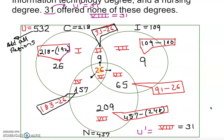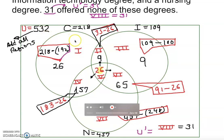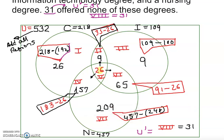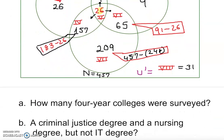Now I can find the universal set by adding all regions inside and outside the circles. Adding everything: 26 plus 9 plus 9 plus 157 plus 26 plus 65 plus 209 plus 31 equals 532. So 532 colleges participated in this survey. Now we're ready to answer questions. How many four-year colleges were surveyed? The answer is 532.